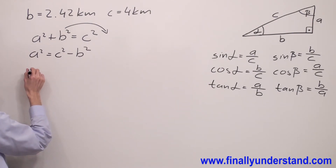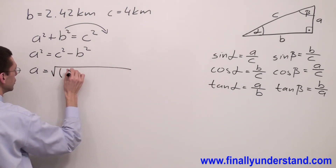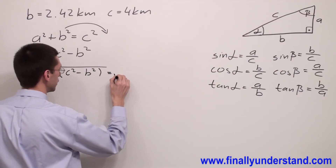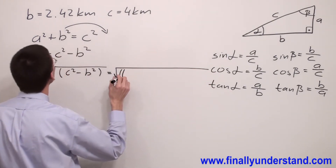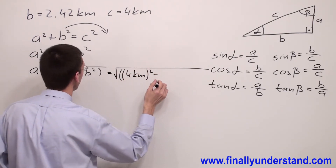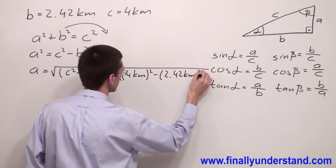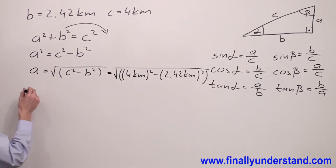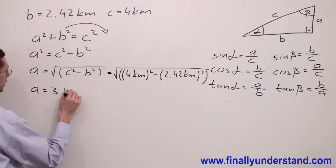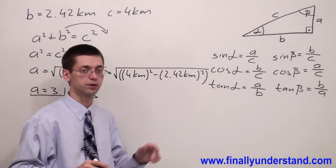In order to find a, I have to square root both sides of the formula, giving a equals the square root of (c squared minus b squared), which equals the square root of (4 kilometers squared minus 2.42 kilometers squared). Using the calculator, you're supposed to get a equals 3.18 kilometers.